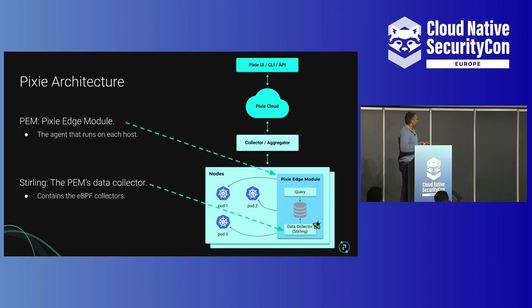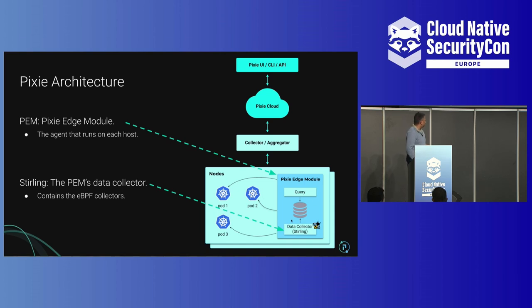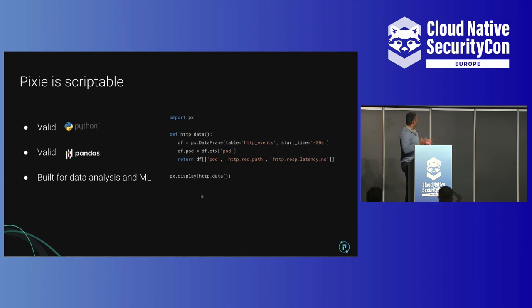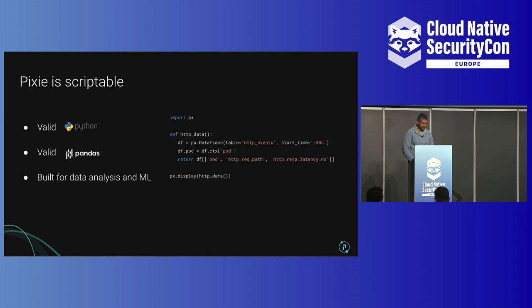Here's a very high-level diagram of the Pixie architecture. At the highest layer you have our APIs, UIs, and CLIs. There's a cloud system to help orchestrate everything. But most of the heavy lifting happens with the collector, aggregator, and the actual Kubernetes nodes. We deploy something called the Pixie Edge module on every single node. A data collector based on eBPF collects information across all your pods. We store this in a ring buffer so we can query it later. Everything in Pixie is scriptable with a language designed for data analysis and machine learning — essentially valid Python and pandas, operating on data frames.